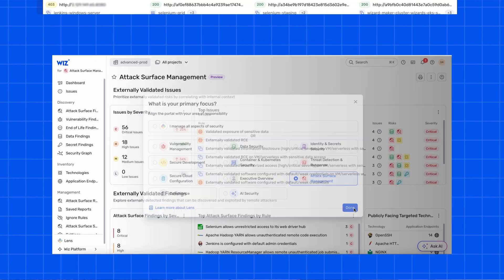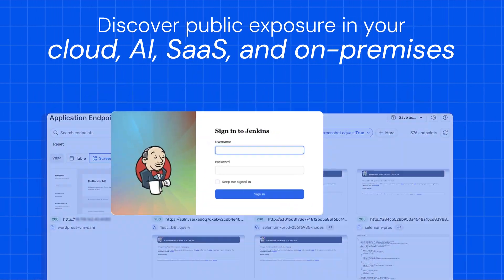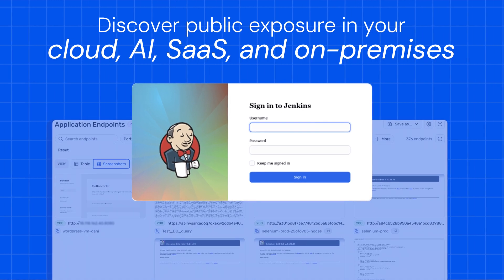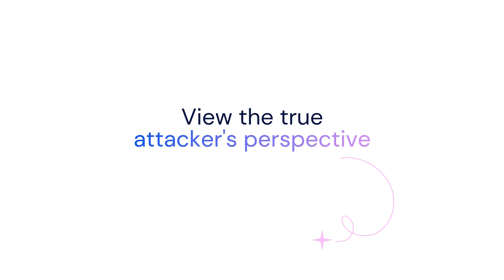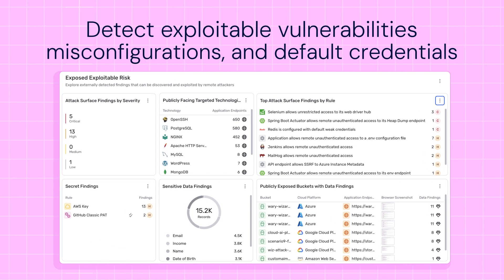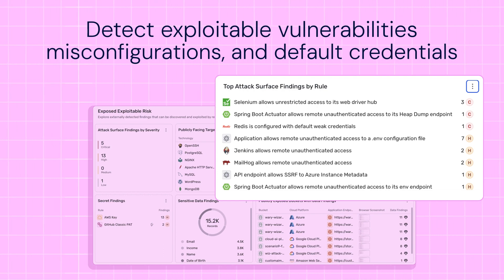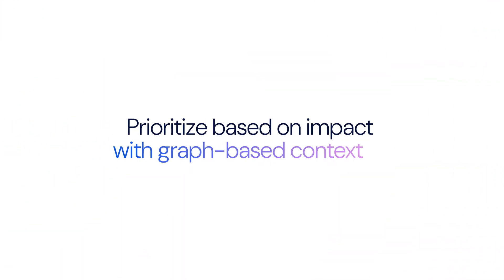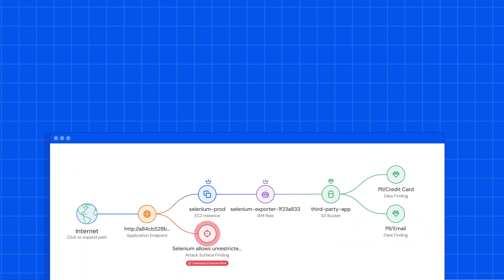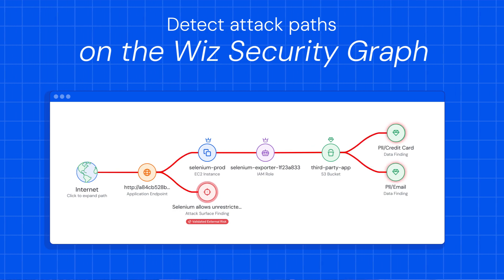Wizz ASM continuously discovers externally facing assets including domains, IP addresses and API endpoints across your entire environment. From there, Wizz simulates an attacker's perspective, validating vulnerabilities, misconfigurations and default credentials that are actually exploitable from the outside, and also detects secrets and data exposure. The external risk is then correlated with internal context to identify real attack paths and highlight exposures with true business impact, like paths to sensitive data or to privilege escalation.